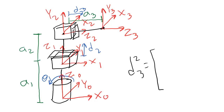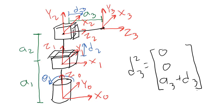Lastly, let's do d23. The displacement from the center of frame 2 to the center of frame 3 appears to be entirely in the z direction, an amount of a3 plus d3, with 0 displacement in x and y. Changing d3 just changes the displacement between these two frames in the z direction — it doesn't change anything about the displacement in x and y directions. So we're done with this example.